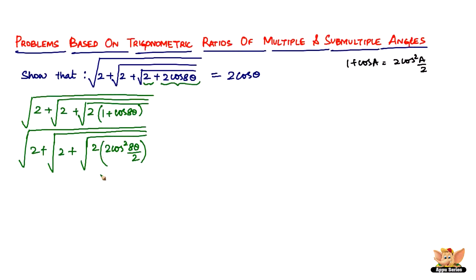The next step: 2 × 2cos²4θ gives us 4cos²4θ. So under the square root we now have √(4cos²4θ).